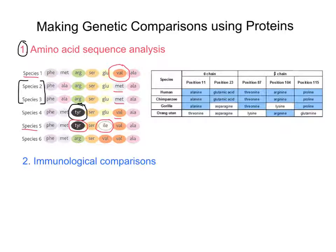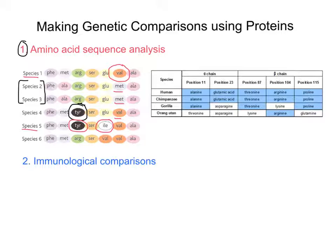Essentially what we're saying is that related organisms have similar base sequences in their DNA and therefore similar amino acid sequences in their proteins, and the number of similarities or differences in the sequence is simply counted. I've put a table on the right-hand side with information about hemoglobin. Adult hemoglobin actually contains two alpha chains of 141 amino acids and two beta chains of 146 amino acids, making a total of 287 amino acid positions available to compare against other species.